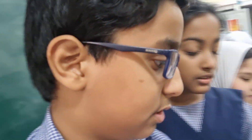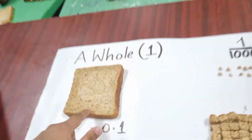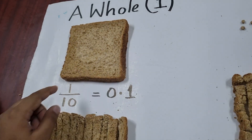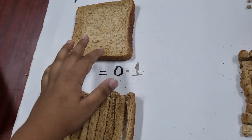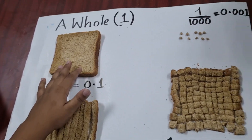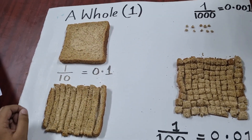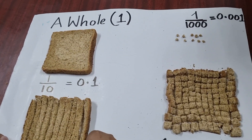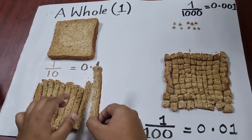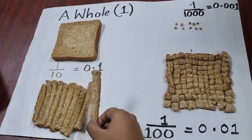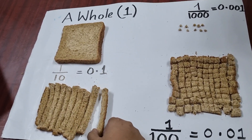I'm Ibrahim Ahmed from 5G7 and today I will explain the concept of decibels. This is a bread slice. It represents a whole. If we divide this into 10 equal parts, one part will be called 1 by 10 or 0.1.